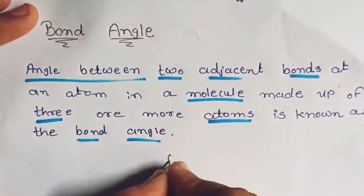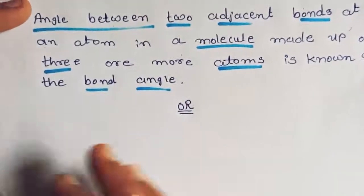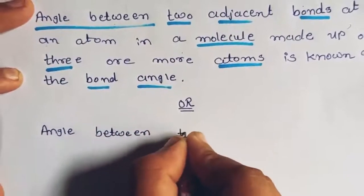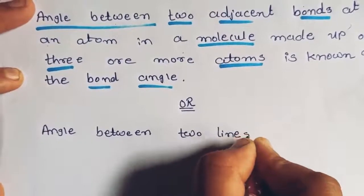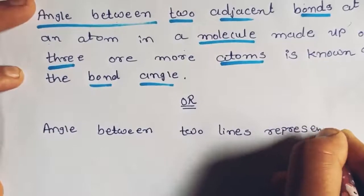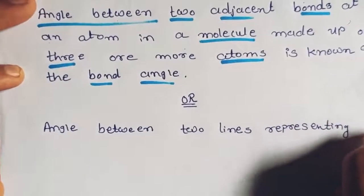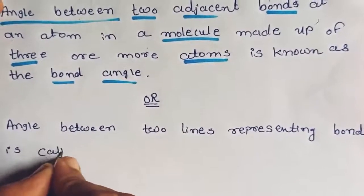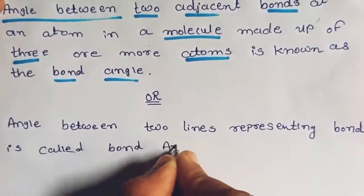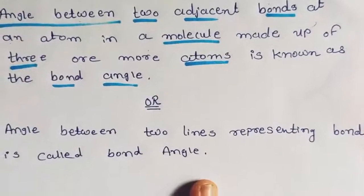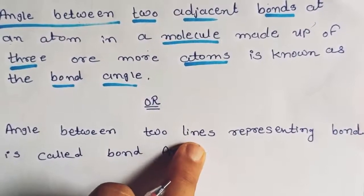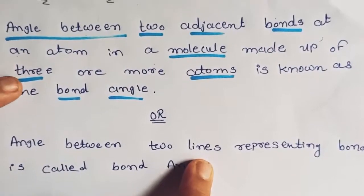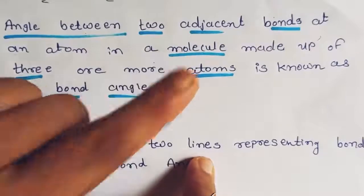We can also say: the angle between two lines representing bonds is called the bond angle. When we represent bonds with lines, the angle between adjacent lines is the bond angle. The main point is that whenever we talk about bond angle, there must be a minimum of 3 atoms present inside your molecule.